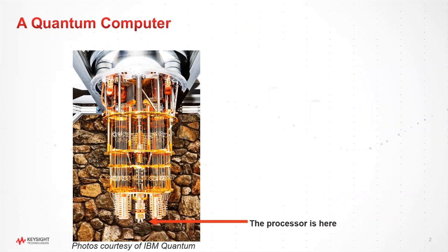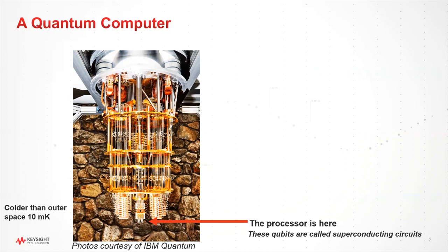First, you can see that we have the processor located at the bottom of the cryostat. This is a superconducting system, and these qubits therefore need to be very cold to operate. At this level in the cryostat, we want to ensure good connectivity to the chip, minimizing any sorts of crosstalk and any errors, and we want to have very precise connectivity to the rest of the computing system. How cold does it actually need to be? In this case, we're operating the processor at 10 millikelvin, and that's quite a bit colder than even outer space.